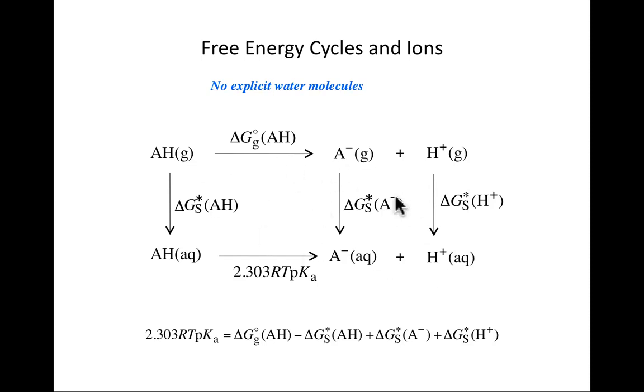In the absence of explicit solvation of any sort, I'm just going to take that same Born-Haber cycle and write it out explicitly. If I want this ΔG, which is equal to 2.303 RT times the pKa, then I have this relationship where I'm going to take computed value, computed value, experimental value, computed value.